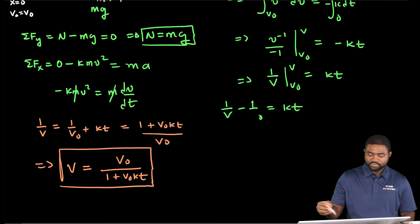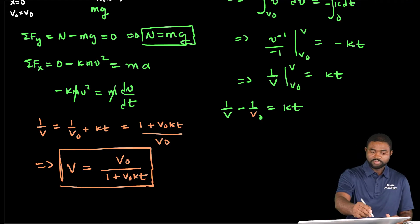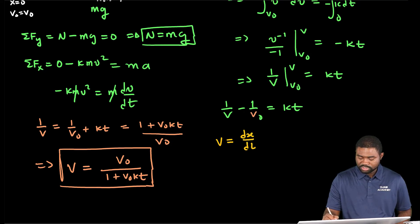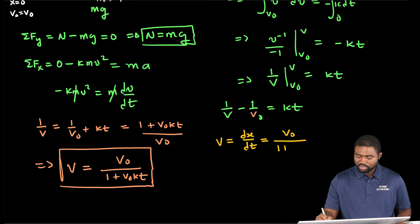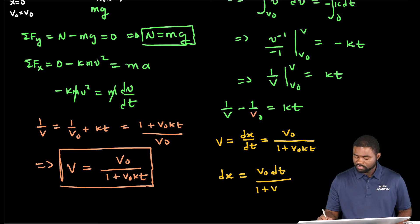The next step is to determine the expression for position as a function of time. We note that v equals dx/dt, which equals v₀ divided by (1 + v₀kt). Therefore, dx equals v₀ dt divided by (1 + v₀kt).